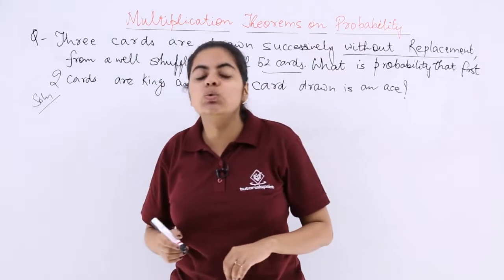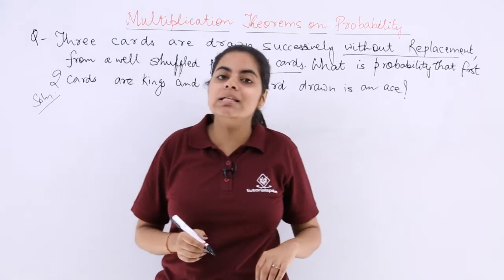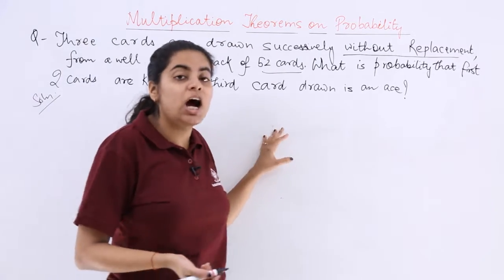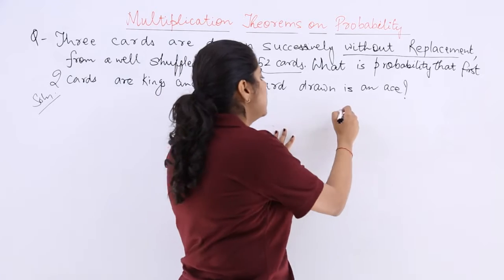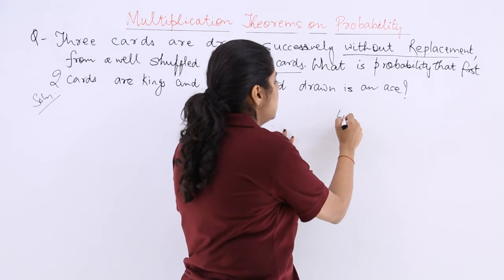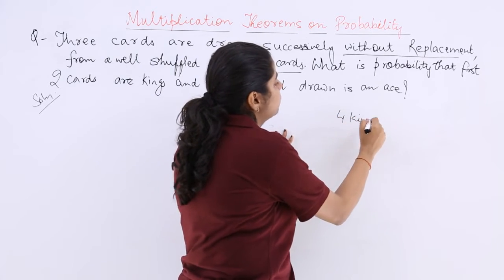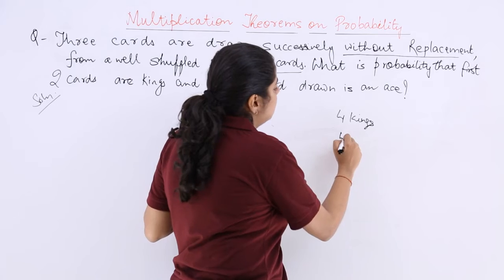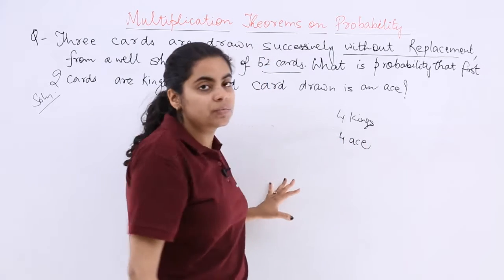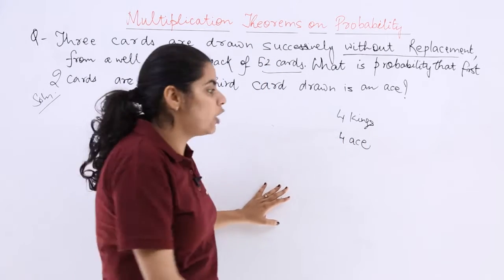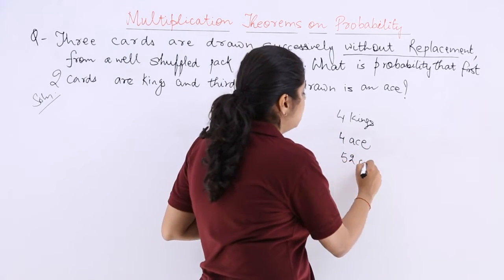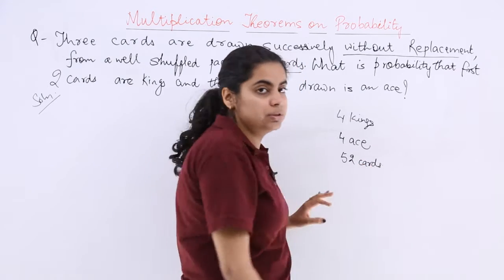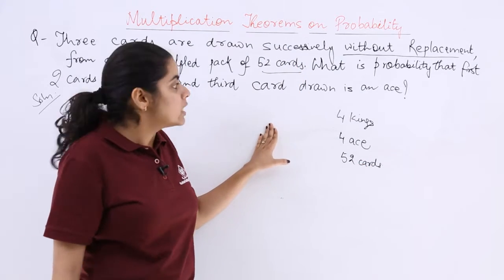The first 2 cards are kings, then the third card is an ace. How many kings are there in a set of cards? 4 kings — one of each suit. Similarly, there are 4 aces. Total cards are 52, which are well-shuffled.